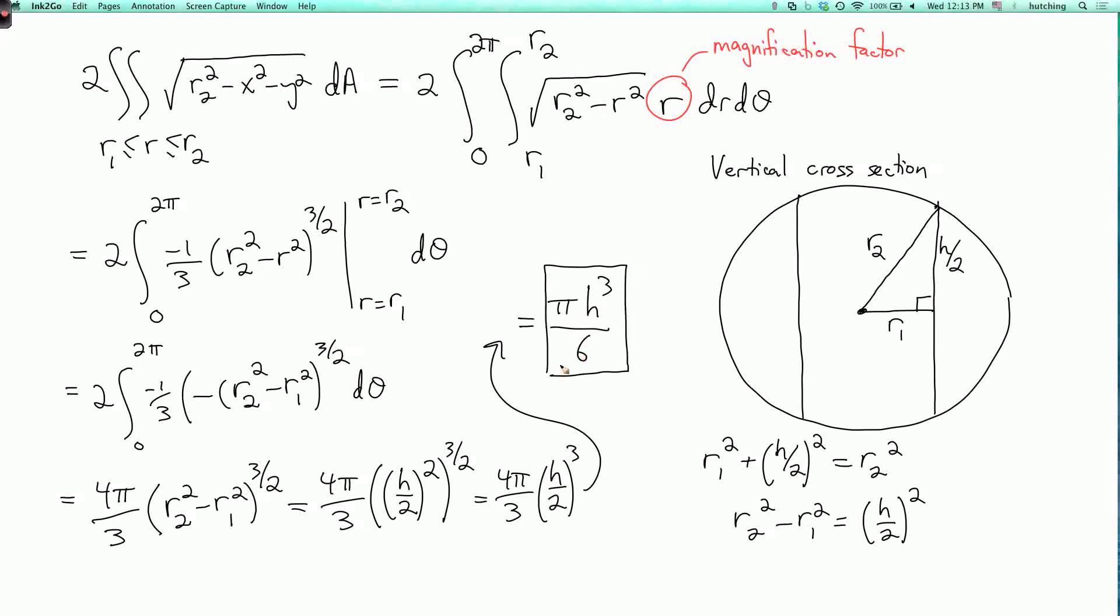So kind of remarkably, it really only depends on h, even though we needed to use r1 and r2 to figure out what it was. So if you want to make a wedding band of height h by taking a ball and drilling out a cylinder, then the total amount of metal you're going to need is going to be the same no matter what ball you started with, as long as you did it in such a way that you got a cylinder of height h.